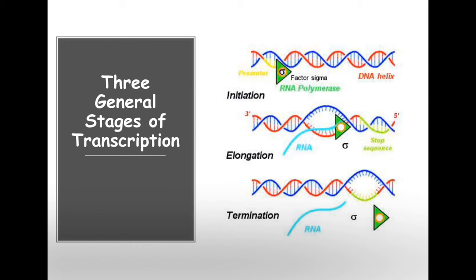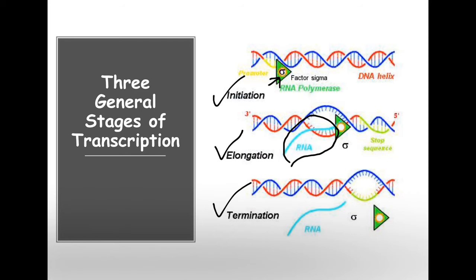There are three general stages when we talk about transcription, particularly in bacteria. You'll see the sigma factor symbol, but we'll talk about that later. The first stage is initiation, where RNA polymerase will come in and associate with the template strand to start making the transcript. Elongation is when you're actually making the transcript. And the last stage is termination — there are two general types that we see in prokaryotic termination of transcription.